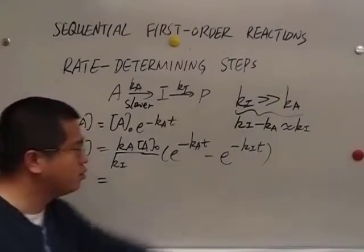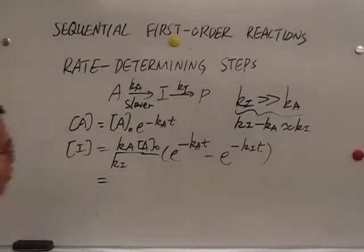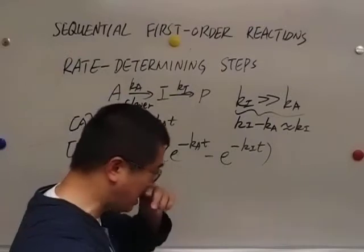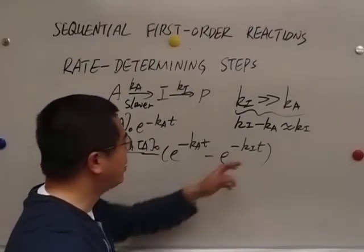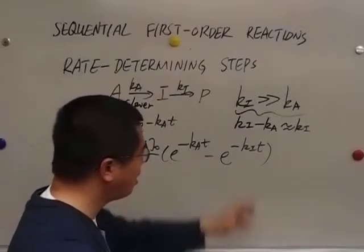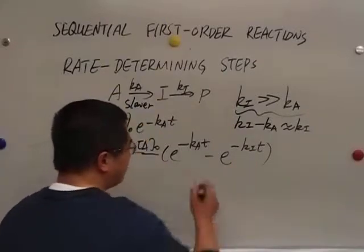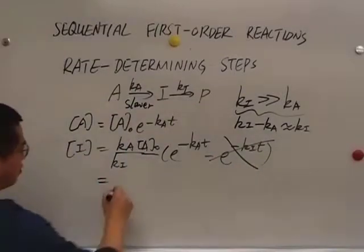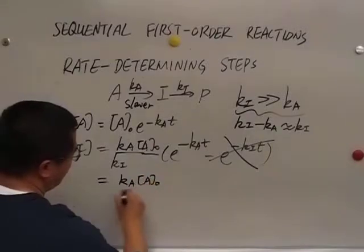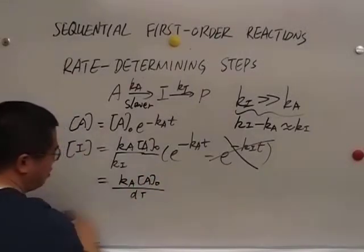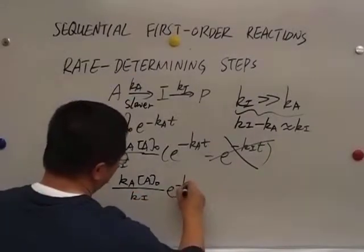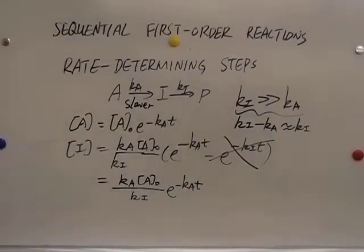And then we compare these two terms. If Ki is much greater than Ka then this Ki times T is much more negative than this negative Kat. Because of that, this term will be much greater than this one. We got this expression here.